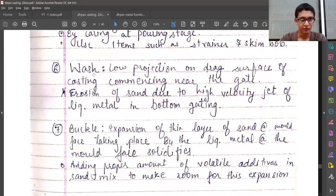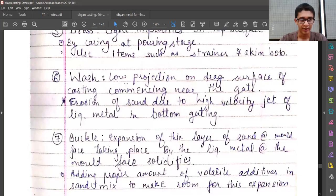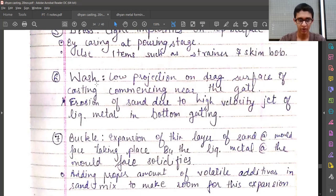The sixth one is wash—low projections on the track surface of casting commencing near the gate. It means erosion of sand due to high velocity jet of liquid metal in bottom gating. When we are pouring the liquid metal through the gate, if that velocity is too high it can erode the sand—that's what wash means, washing of the sand of the mold.